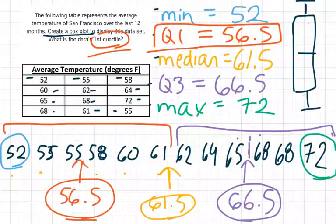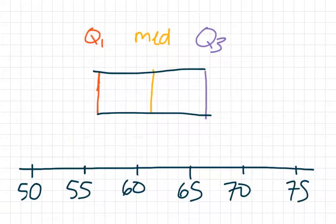The minimum and the maximum make the whiskers. So the minimum is 52. So let's find 52 here. That's one whisker.